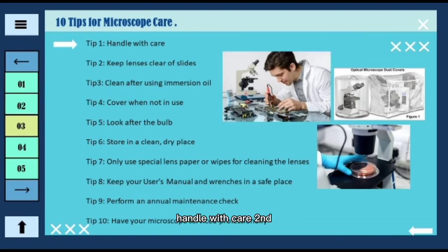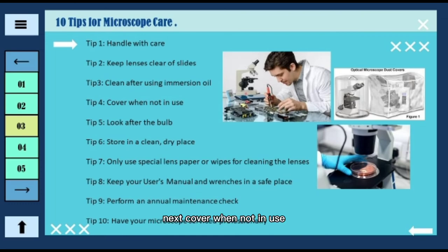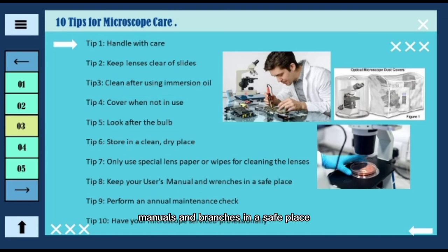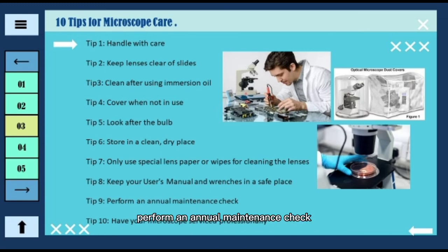Ten tips for microscope care: Tip 1 — handle with care. Tip 2 — keep lenses clear of slides. Tip 3 — clean after using immersion oil. Tip 4 — cover when not in use. Tip 5 — look after the bulb. Tip 6 — store in a clean, dry place. Tip 7 — only use special lens paper or wipes for cleaning the lenses. Tip 8 — keep your user's manuals in a safe place. Tip 9 — perform an annual maintenance check. Tip 10 — have your microscope serviced professionally.